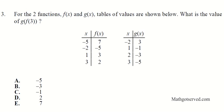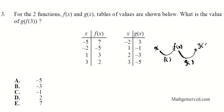Let's move on to question number 3. It says: for two functions F(x) and G(x), tables of values are shown. What is the value of G(F(3))? G of F of 3 means a value gets inputted into function F, and the output of that gets inputted into function G. So we start with x, plug it into F to get F(x), then plug F(x) into G to get G(F(x)). We do this step-wise: first plug the input into the first function, then take that output and plug it into the second function.